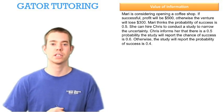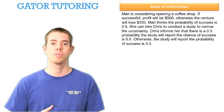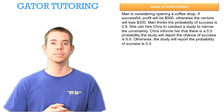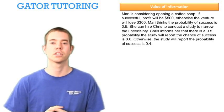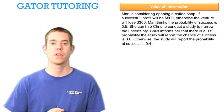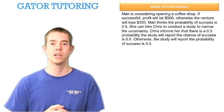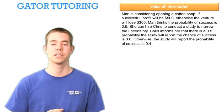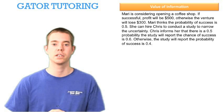Mary thinks the probability of success is 50%, so she thinks the probability of failure is also 50%. She can hire Chris to conduct a study to narrow the uncertainty. Chris informs her that there's a 50% chance that the study will report the chance of success is 60%, otherwise the study will report the chance of success is 40%.